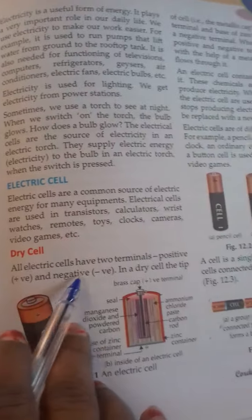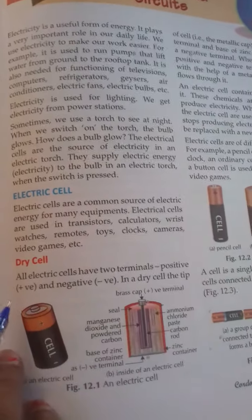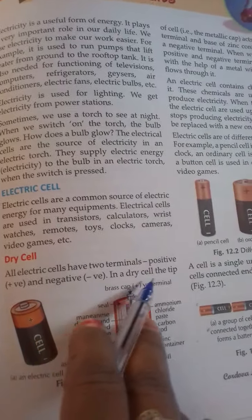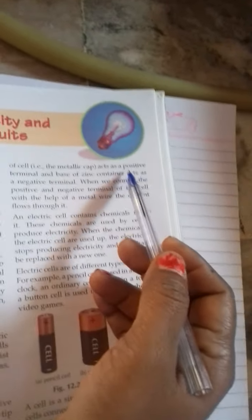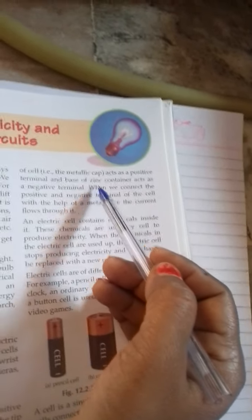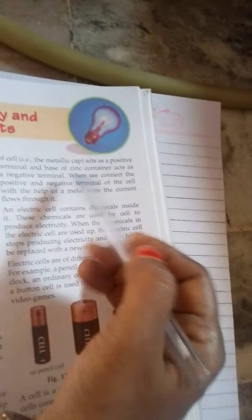Dry cell: all electric cells have two terminals, positive and negative. In a dry cell, the tip of cell, the metallic cap acts as a positive terminal and base of the zinc container acts as a negative terminal.